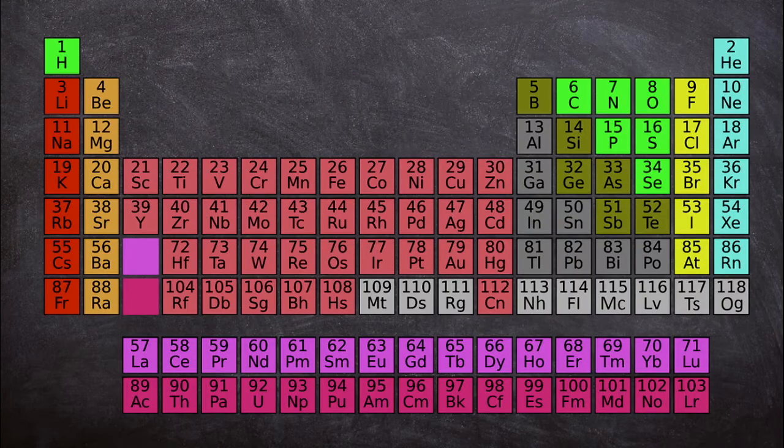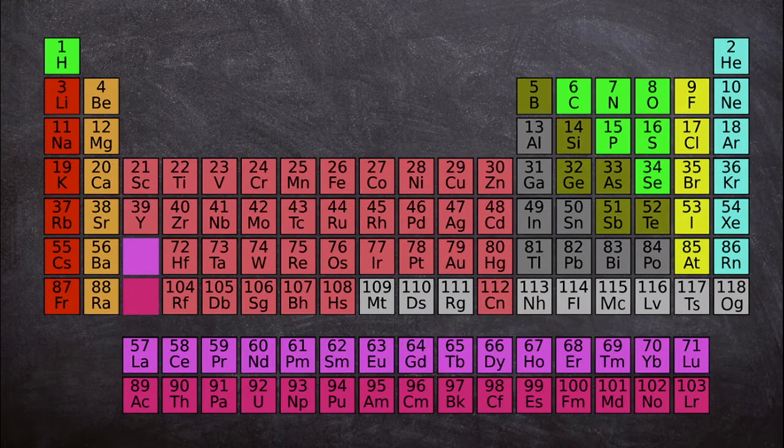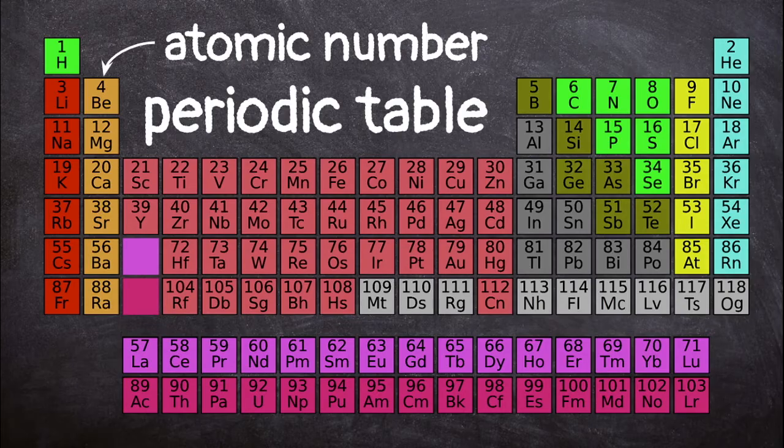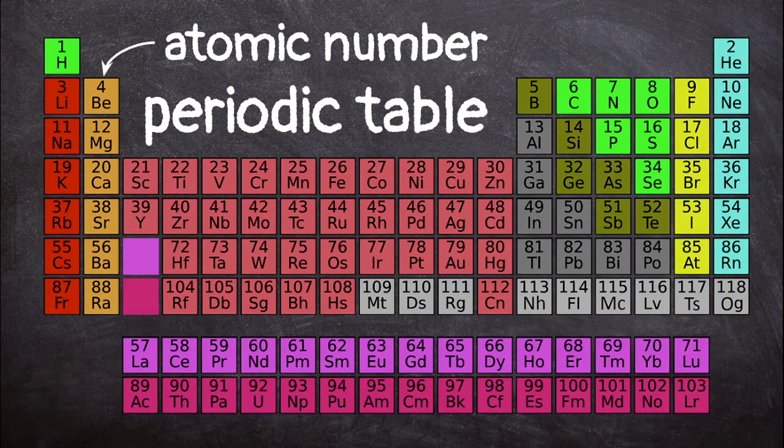There are 118 different elements. Each one has a different number of protons. This number is the element's atomic number. This number helps scientists sort all the elements in the periodic table. Everything around you is made when atoms of these 118 elements join together.